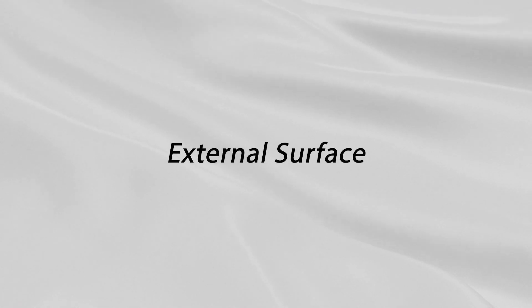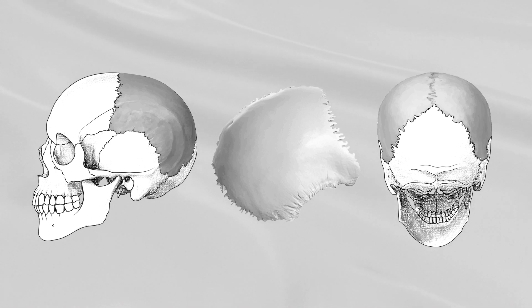External Surface. The external surface is convex and smooth. It is marked near the center by an eminence, the parietal eminence, which indicates the point where ossification commenced.